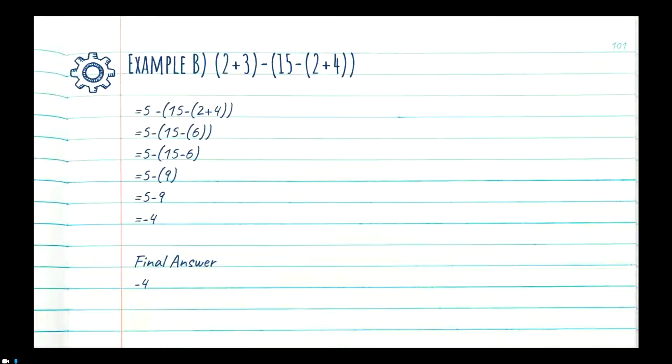So try to keep track of that. Example C: we have a 1 directly beside a bracket (2+3) — nothing separating them. First things first, you want to solve the bracket. Inside the brackets it's just 2+3; there are no child brackets. We go ahead and say that's 5. Now we have 1 times 5.